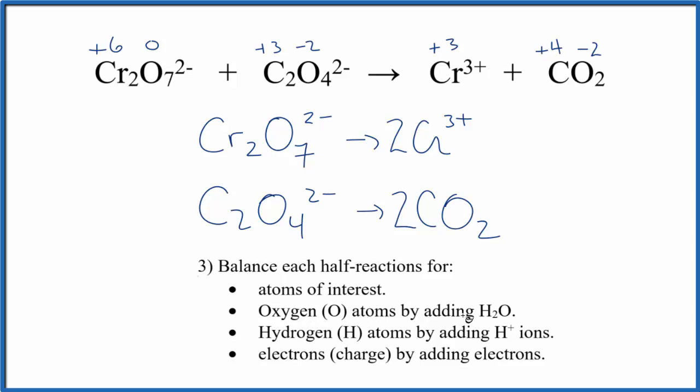Now we can balance the oxygen atoms. We're going to do that by adding water. After all, this is happening in water, so water molecules are available. Seven oxygens, that means we need to add seven water molecules. So now the oxygens are balanced. Down here we have four oxygens. Here we have two, but we need to multiply it by the coefficient. Two times two is four, so we don't need to add any water molecules down here.